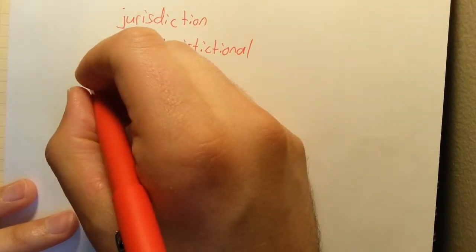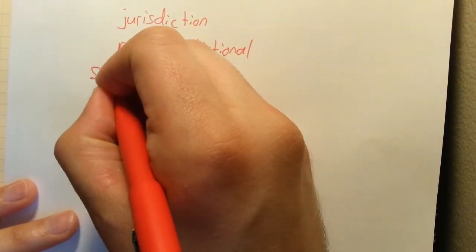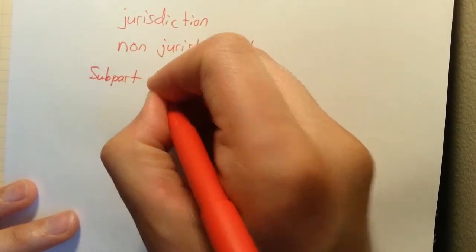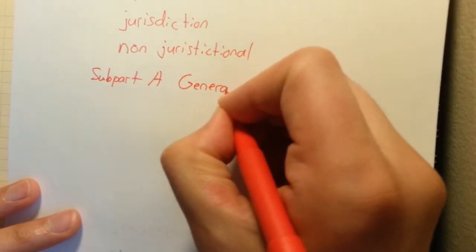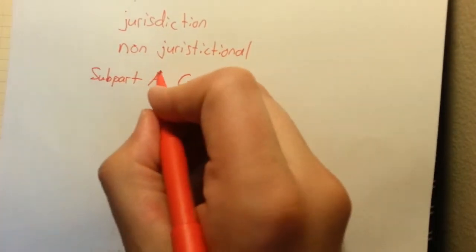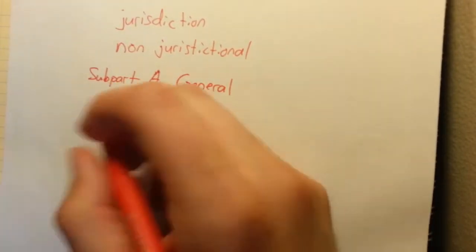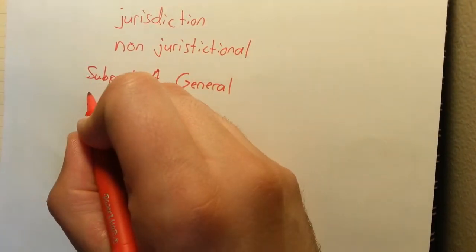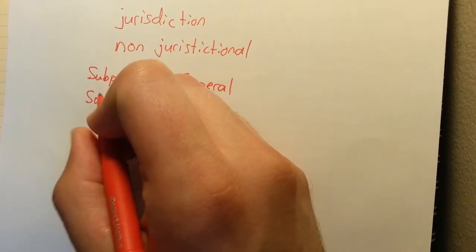So subpart A is just called general. That's where that scope section is and goes through jurisdictional and non-jurisdictional pipelines.